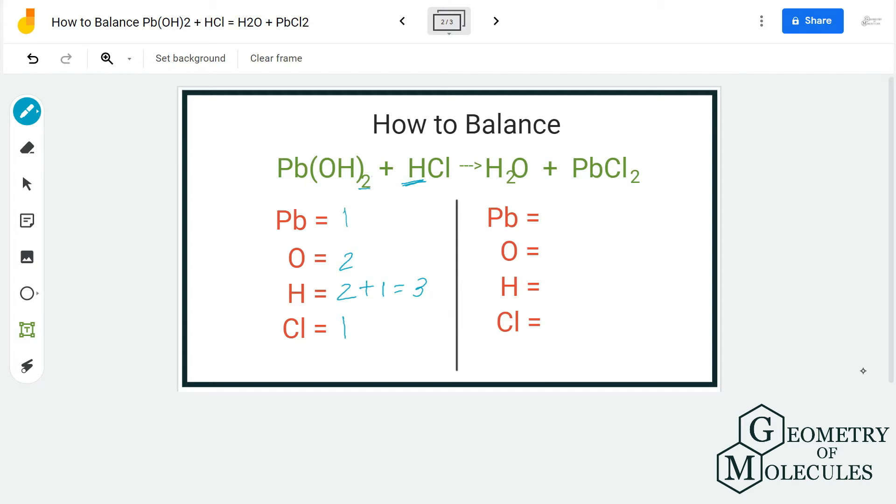Now reactant side is done. Let's move forward to the product side. For product side we have one atom of lead. For oxygen we have one atom. For hydrogen we have two atoms and for chlorine we have two atoms here.